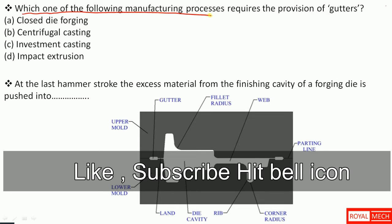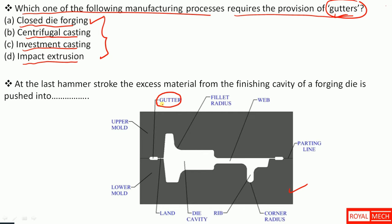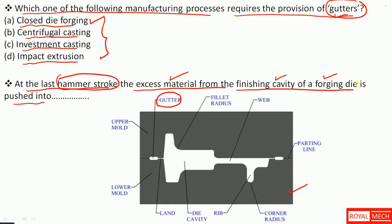Which one of the following manufacturing processes requires the provision of gutters? Out of four options — closed die forging, centrifugal casting, investment casting, impact extrusion — we know already: closed die forging requires gutters. At the last hammer stroke, the excess material from the finishing cavity of the forging die is pushed into the gutter. So gutter is the answer.